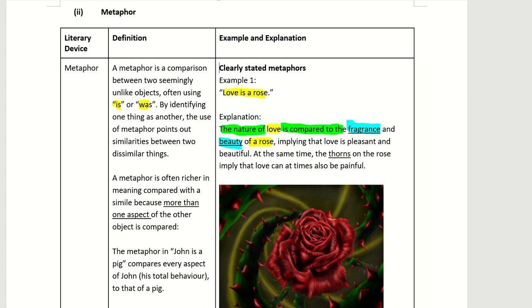What does it imply? It implies that love is pleasant and beautiful. This is one interpretation of the metaphor 'love is a rose.'